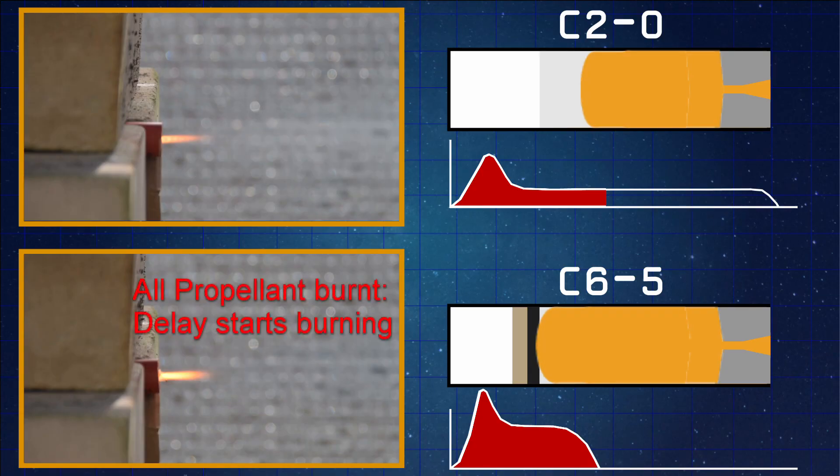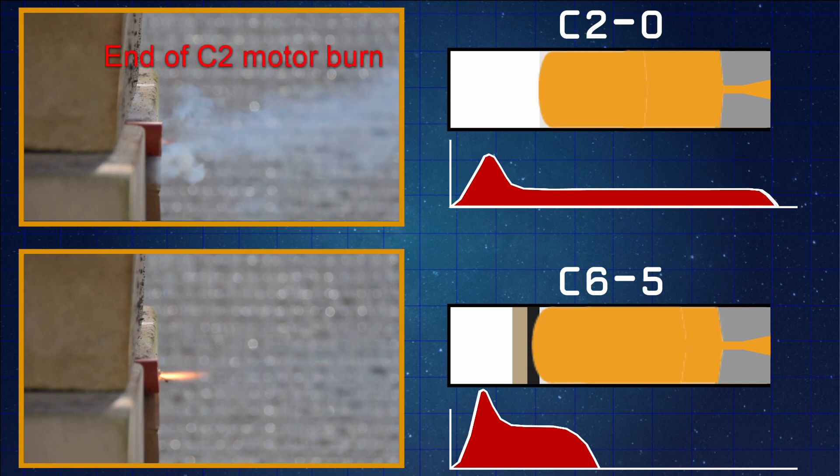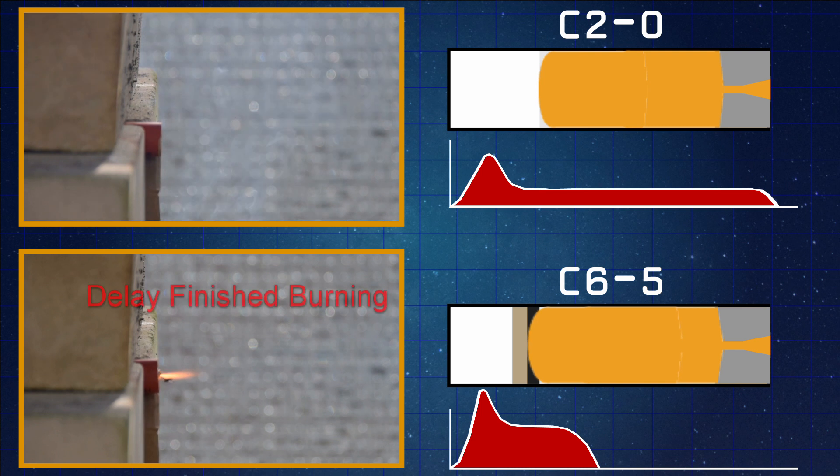So in the static fire that we did you can see that the delay starts burning once the large flame and the C6 motor is reduced significantly. And then you can also see the finish of the burn on the C2 motor. And finally once the delay is finally burned on the C6-5 motor we see the explosive ejection of the entire motor.